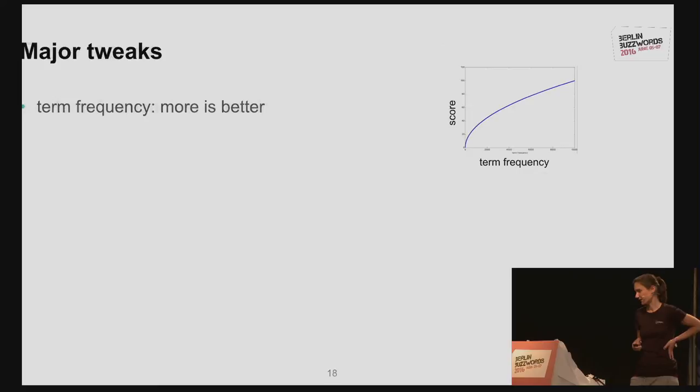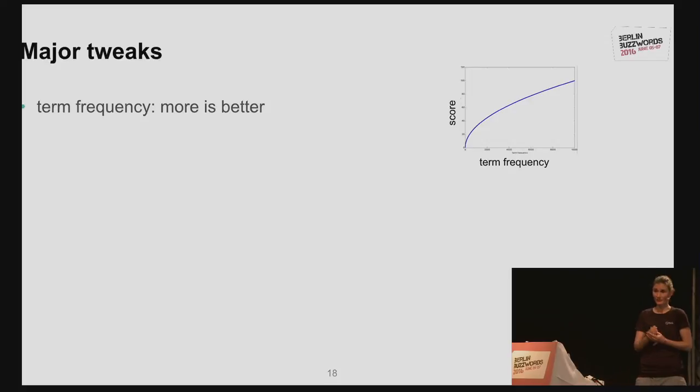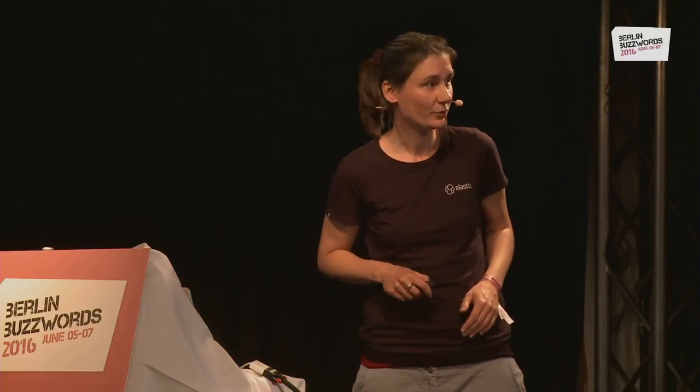Just summarizing TF-IDF very quickly: there are three major tweaks. First, we take the term frequency and say more is better — the higher the term frequency, the more score it gets. It's not a linear function — it's a square root of the term frequency. That's basically what TF-IDF in Lucene does right now.